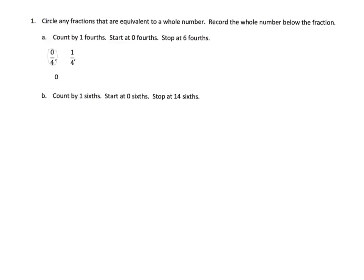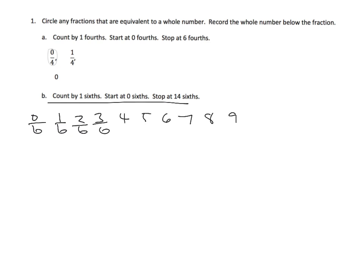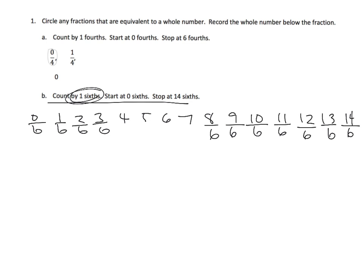We're going to start with some baby steps. Count by sixths and stop at fourteen-sixths. So you have zero-sixths, one-sixths, two-sixths, three-sixths, four, five, six, seven, eight, nine, ten, eleven, twelve, thirteen, and fourteen-sixths. All of these were supposed to be written with six in the denominator because these are sixths that we were talking about.